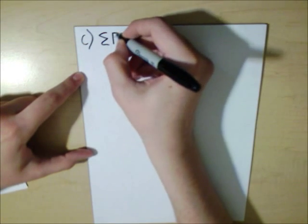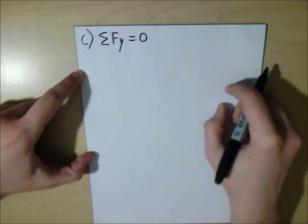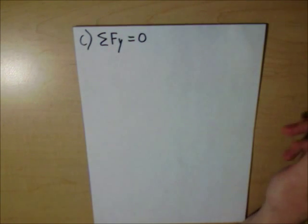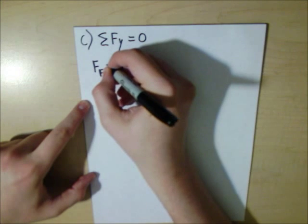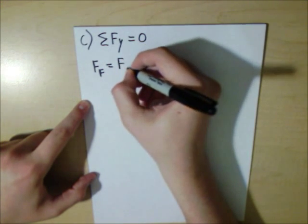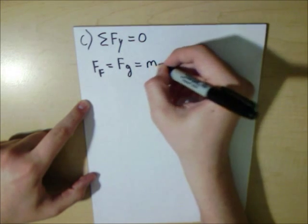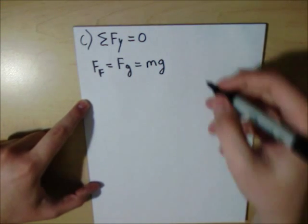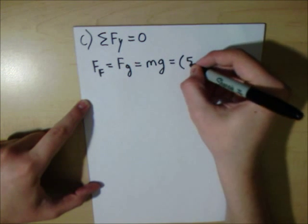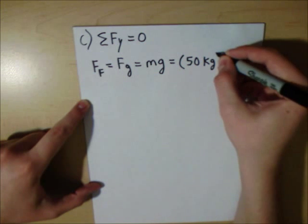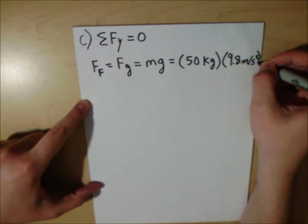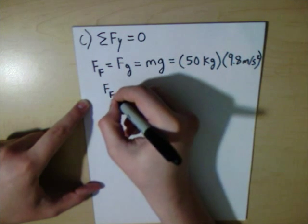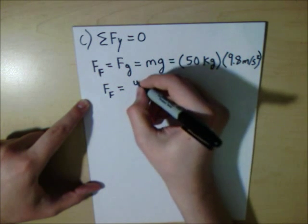So we have the sum of the forces in the y-direction is equal to zero. And the force that we'll use is friction, which is equal to the force of gravity. So we use the mass times gravity. And simply, we just plug in our two numbers, which is 50 kilograms times 9.8 meters per second squared. So we have the force of friction is equal to 490 newtons.